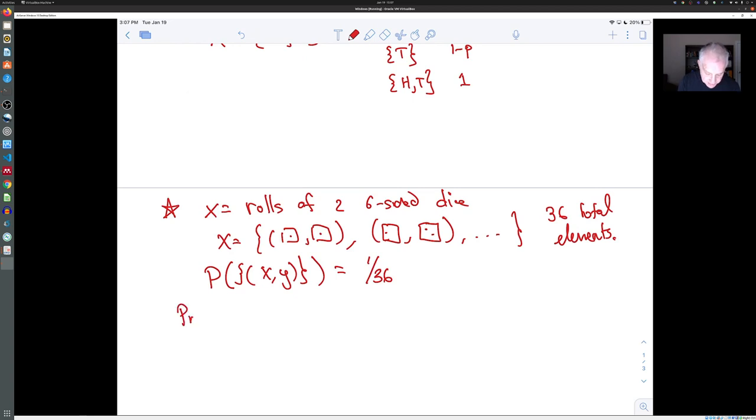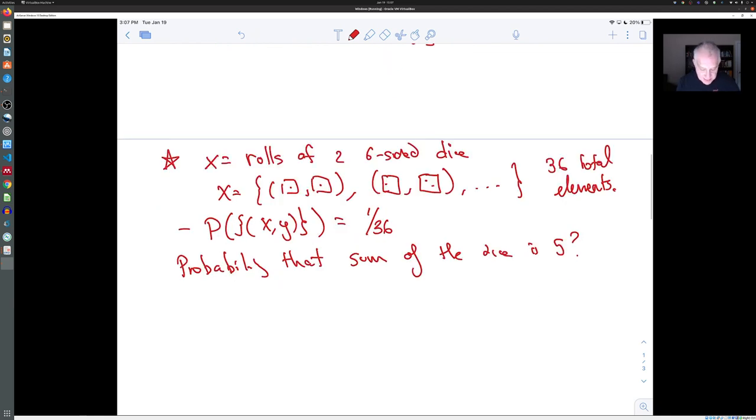But then we could also ask, what is the probability that the sum of the dice is 5? Well, to get a sum of 5, you would have to roll a 1 and a 4, a 2 and a 3, a 3 and a 2, or a 4 and a 1. So the event that you're interested in looks like this, that's the subset of the sample space. And the probability of that event is 4 out of 36, or one ninth.